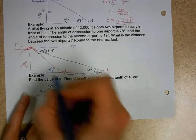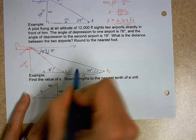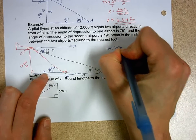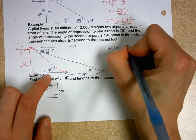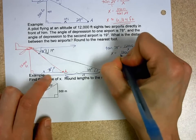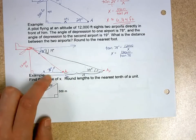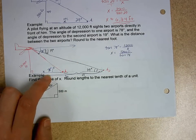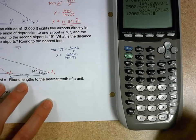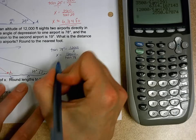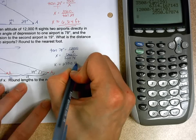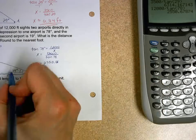You'd have to set up two tangent ratios again. I would want this one to be x, and I'd probably call this whole thing y. So the tangent of 78 degrees equals 12,000 over x. You switch them, so I get 12,000 divided by the tangent of 78. So 12,000 divided by tangent of 78, and x equals 2,550.68, and that would be in feet.